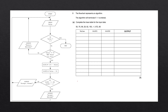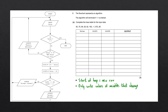There are two important rules to follow when completing a trace table. The first rule is that when we get to the start of the loop in the flowchart, we're going to write the changing variables in a new row. The second rule is to only write the values of variables that change — when the value of a variable changes, we're only going to be writing the value of that variable.